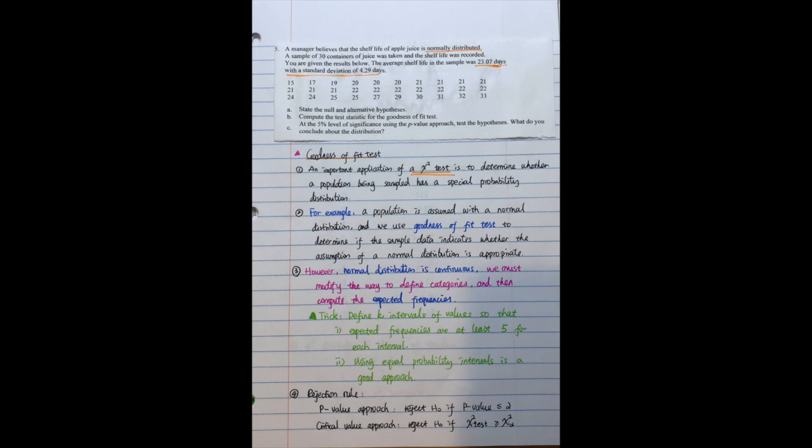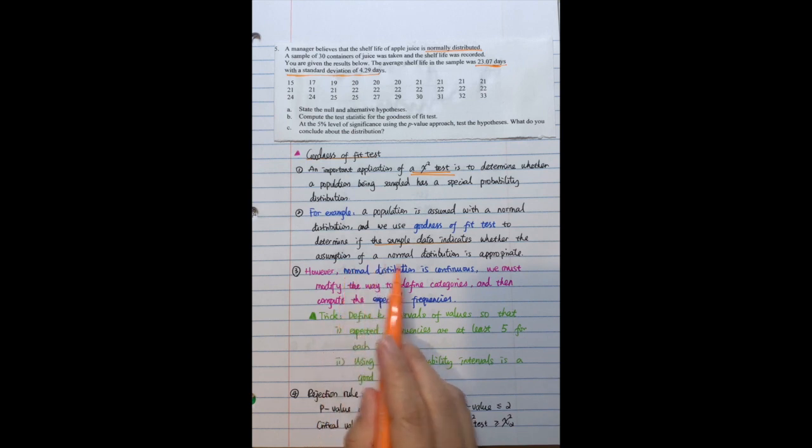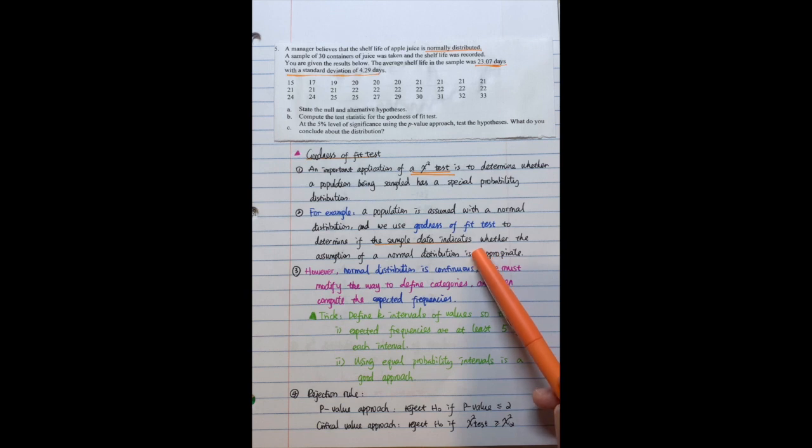For example, let's assume a population is assumed with a normal distribution just like this question. We will use goodness of fit test to determine if the sample data indicates whether the assumption of a normal distribution is appropriate. That means we assume the population is normally distributed. Then we want to test this assumption is correct or not. So we use the sample data to test or to indicate whether this assumption is appropriate or not.